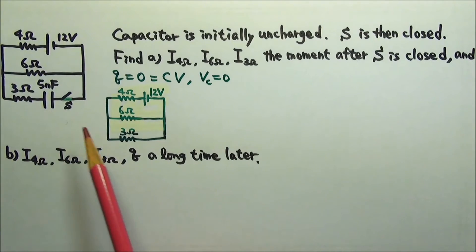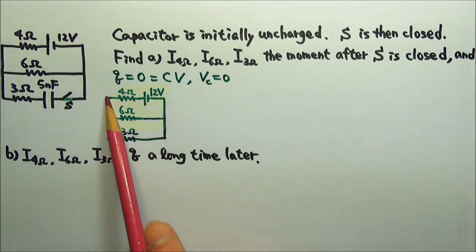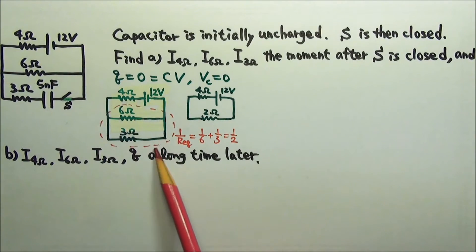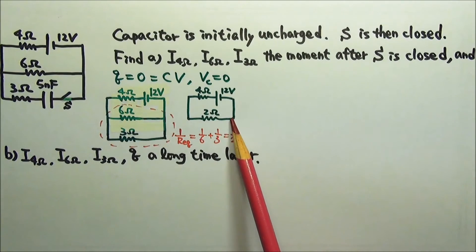The circuit is kind of like this. So we have the 6 and 3 ohms, they are in parallel, and then together they are in series with the 4 ohms. So we can find their equivalent to be 2 ohms. So we can simplify this circuit to that.